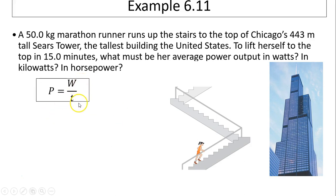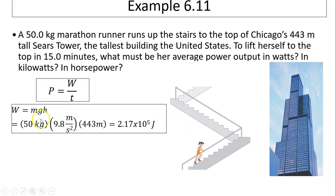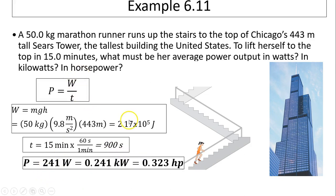Power equals work over time. How much work did she do from the bottom all the way to the top? The force she has to overcome is her weight. Force times displacement, which is MGH. Her work has to be 2.17 times 10 to the fifth joules. In the time of 15 minutes, we have to convert time into seconds, which is 900 seconds. So the power is work over time, you will have 241 watts, which is 0.241 kilowatts, which is 0.323 horsepower.